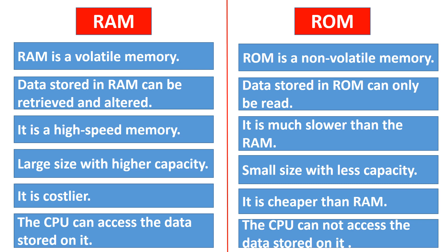RAM is a high-speed memory, while ROM is much slower than RAM. RAM has large size with higher capacity, whereas ROM has small size with less capacity. RAM is costlier, while ROM is cheaper than RAM. The CPU can access the data stored on RAM, but the CPU cannot access the data stored on ROM.